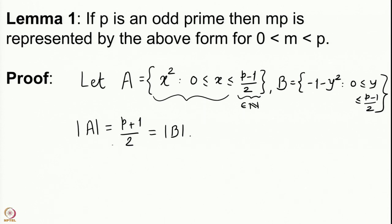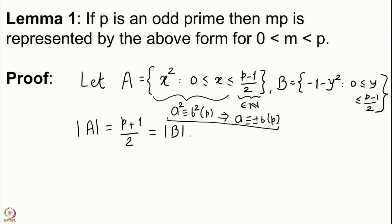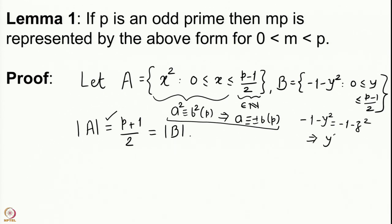So a² ≡ b² mod p implies a ≡ ±b mod p. This simple statement enables us to prove the cardinality. Similarly, if −1 − y² ≡ −1 − z² mod p, this would imply y² ≡ z², giving y ≡ ±z mod p, which would imply equality — a contradiction. So this enables us to prove equality of cardinalities.